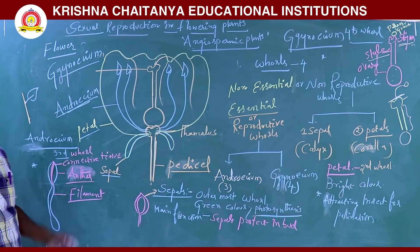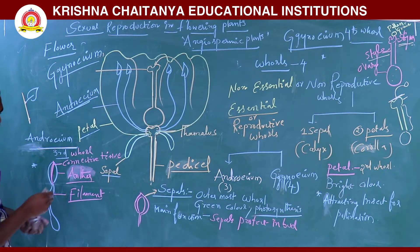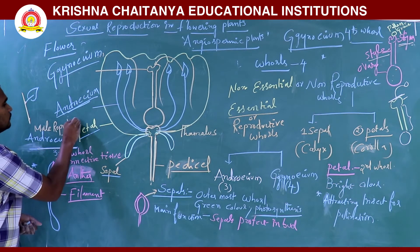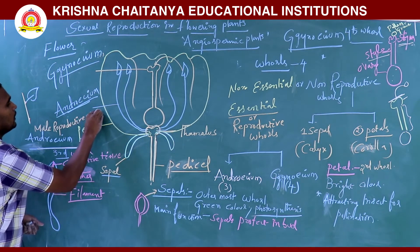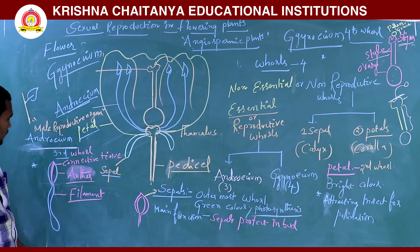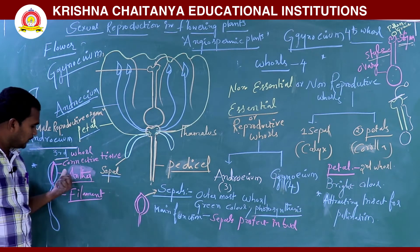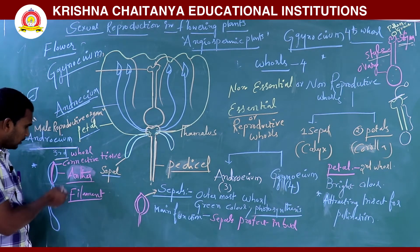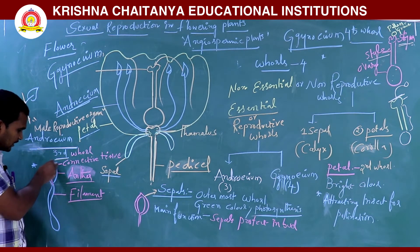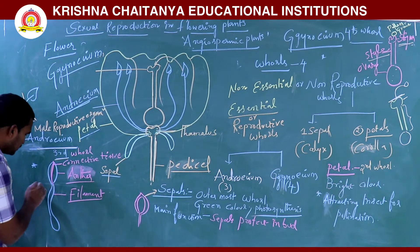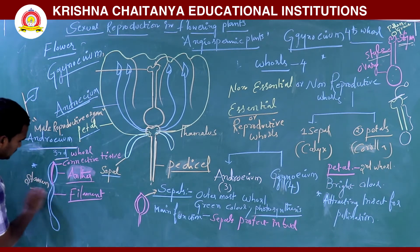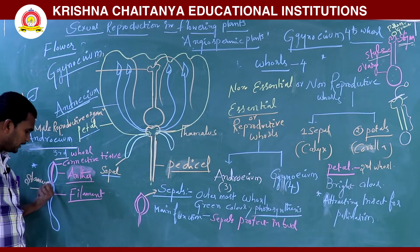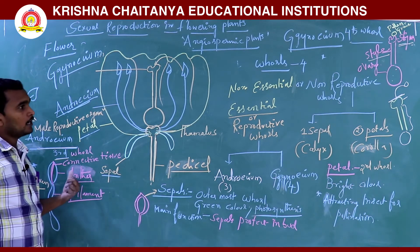Androecium is the male reproductive organ — it is the unit of stamens. The stamen has an anther and a filament. The anther is a bilobed organ; the two lobes are separated by connective tissue, which is sterile tissue not involved in reproduction.